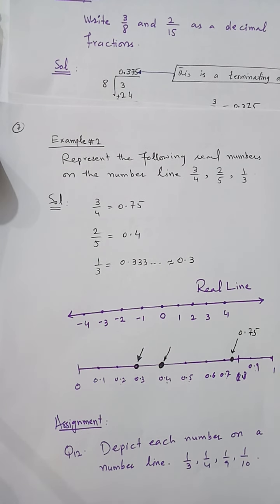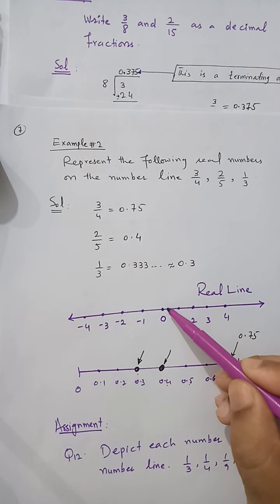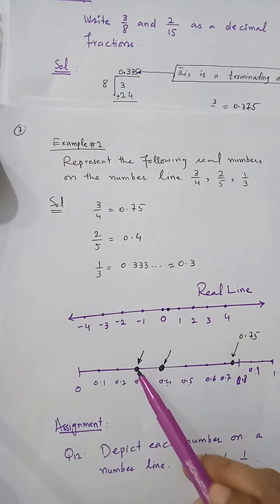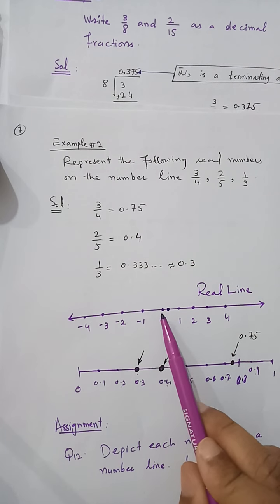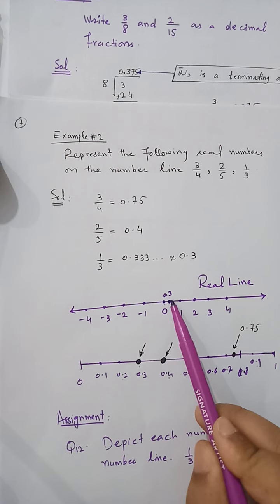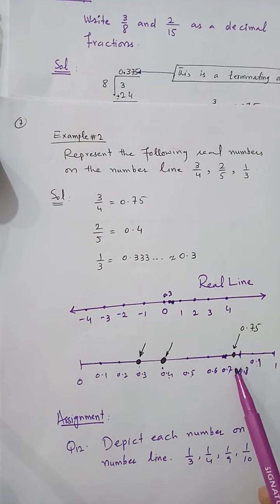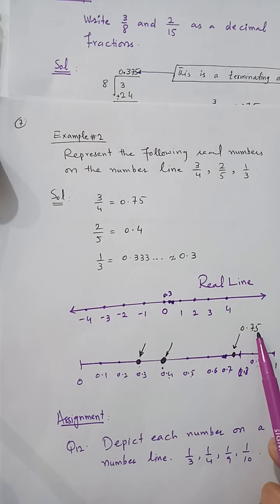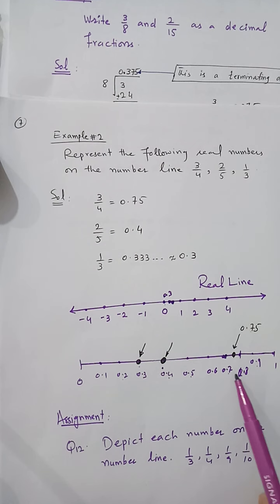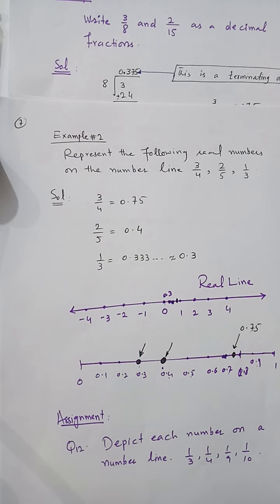On the number line between 0 and 1, divided into 10 parts: 0.1, 0.2, 0.3, 0.4, ... 0.9, 1.0. So 0.3 is represented here, 0.4 is represented here. Point 0.75 lies between 0.7 and 0.8, approximately in the middle, since 0.75 is the midpoint of 0.7 and 0.8. That is the procedure to represent a real number on the number line.